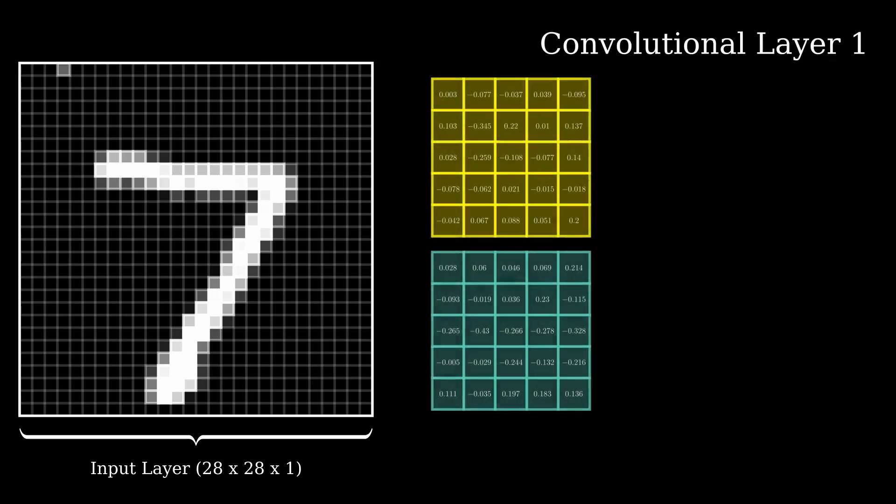We start with the input layer, which is a 28x28x1 dimensional grayscale image. The image is fed into the first convolutional layer that consists of two 5x5x1 dimensional filters and two biases.